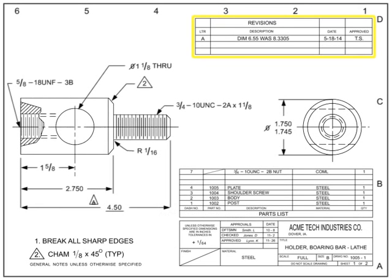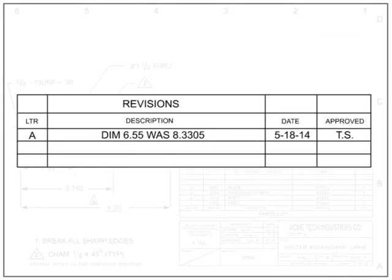The revisions block is a tabulated list of the revisions that have changed the original drawing. It is typically located in the upper right-hand corner of the drawing, although some drafting standards attach it to the title block. The sequence for revision letters starts with A as the first revision, followed by B for the second, and so on. A drawing that has had no revisions has a blank revisions block.